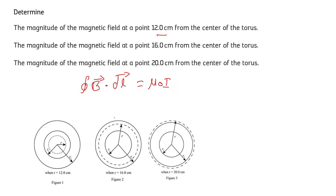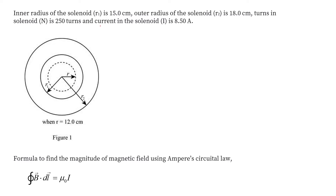The given values are: the inner radius is 15 cm, the outer radius is 18 cm, the number of turns on the toroid is 250 turns, and the current in the toroid is 8.50 Ampere. Since 12 cm is inside the inner radius and 20 cm is outside the outer radius, the magnetic field at both those points will be 0.